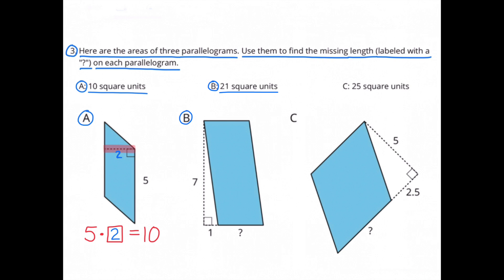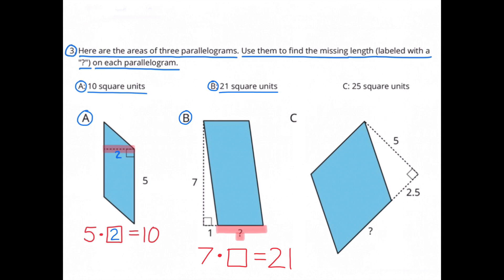The area for figure B is 21 square units. The height is 7, and the base is missing. 21 divided by 7 is 3, or 7 times 3 is 21. The measurement for the missing base is 3 units.